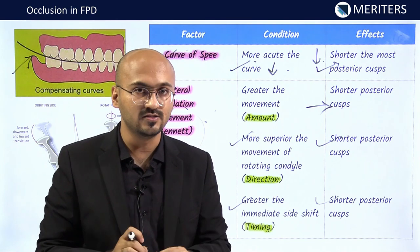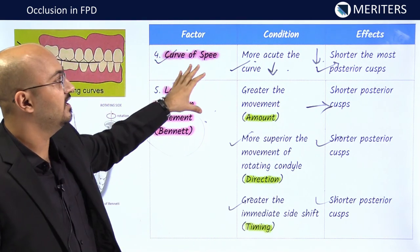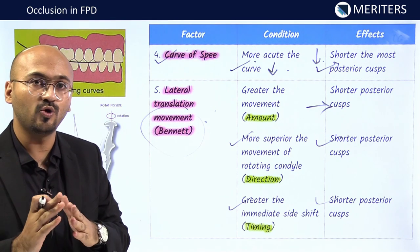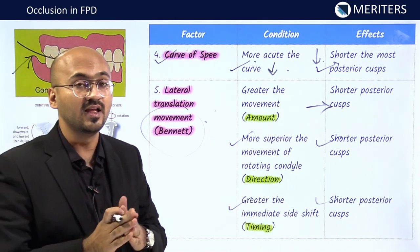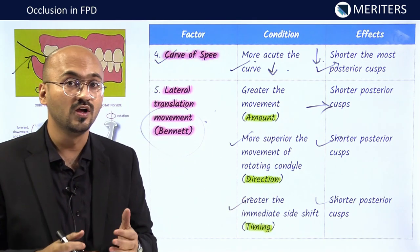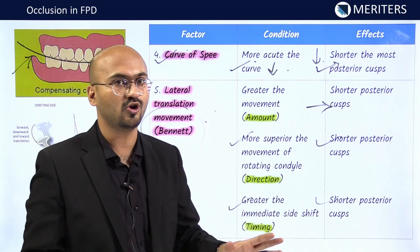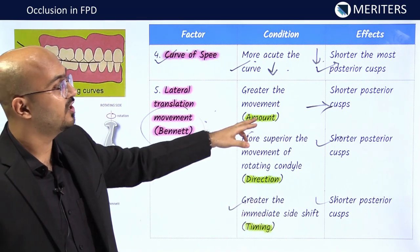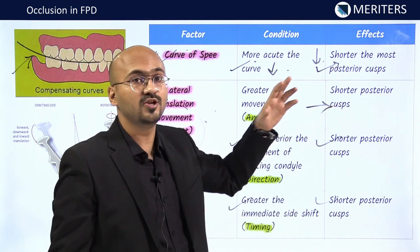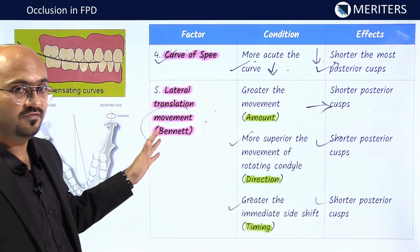Note that here we are not aiming for balanced occlusion — we want posterior tooth contacts on the working side in excursion, as occurs in a natural dentition, and no contact on the balancing side. To achieve that, you determine the cuspal height based on all these vertical factors — whether to keep cusps long or short depends on multiple determinants.